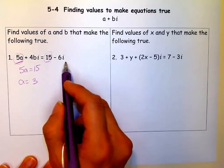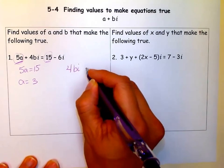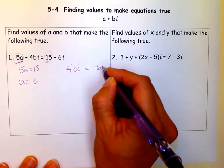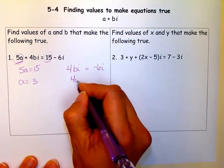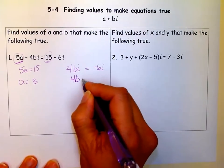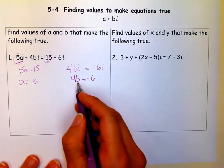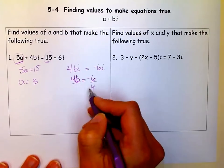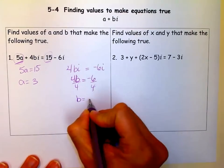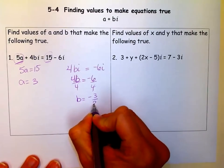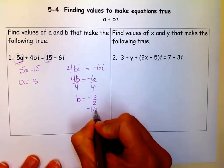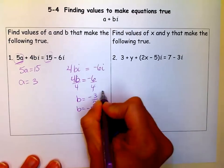And you do the same thing here, if 4BI is equal to negative 6I, then 4B must be equal to negative 6. Well, then what's B? To get B alone, we simply divide by 4. And B, if we reduce that fraction, is equal to 3 halves, or you could say negative 1.5. Either one works.